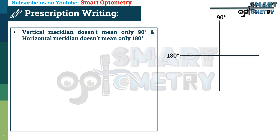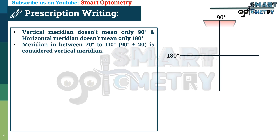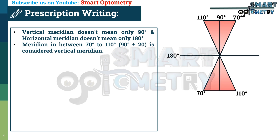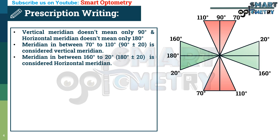Now, vertical meridian doesn't mean only 90 degrees, and horizontal meridian doesn't mean only 180 degrees. Meridians between 70 degrees and 110 degrees — that is, 90 degrees plus or minus 20 — are considered the vertical meridian. And meridians between 160 and 20 degrees — that is, 180 degrees plus or minus 20 — are considered the horizontal meridian.